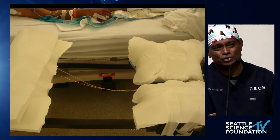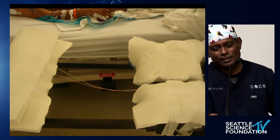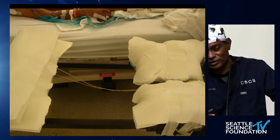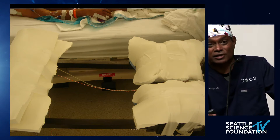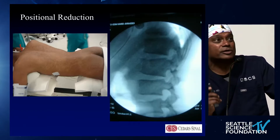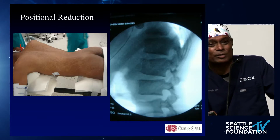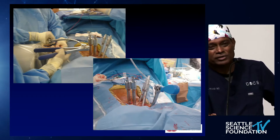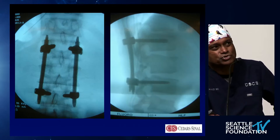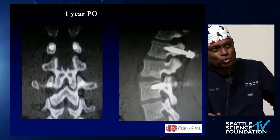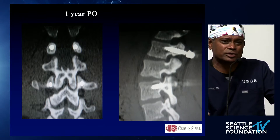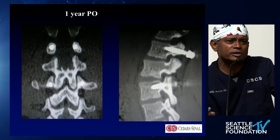Once you put them on the table and hyperlordose them, you get positional reduction. You have about a two-to-four day window to get these patients lined up. After that it starts getting difficult. So you do want them early — stabilize them, perc fix them, line them up, completely done without a single fusion. That patient is going to go on to heal — one year post-op, solidly healed. It's a bony injury.